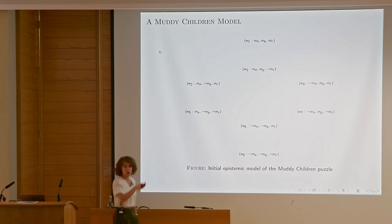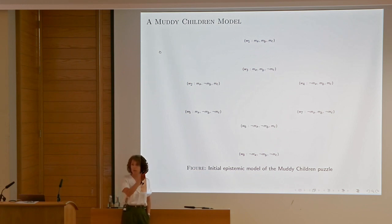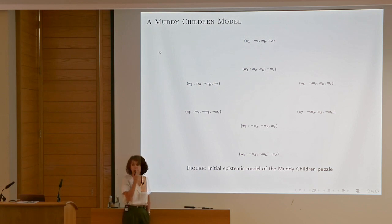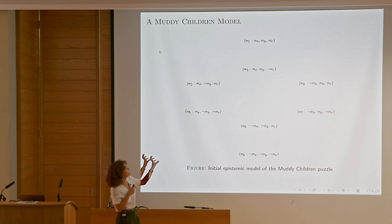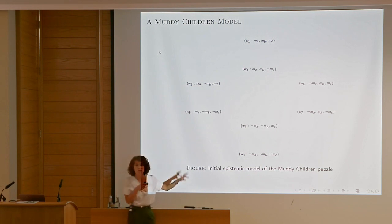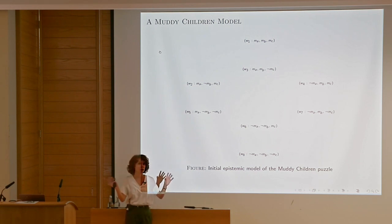Now should I draw some accessibility relations for agents? Can you figure out how to connect W1 with other worlds? In W1 all of them are muddy; in W3, A and B are muddy but C is not. Are those two worlds in an accessibility relation for any of the agents? Yes — for agent C, because C doesn't see their own forehead.